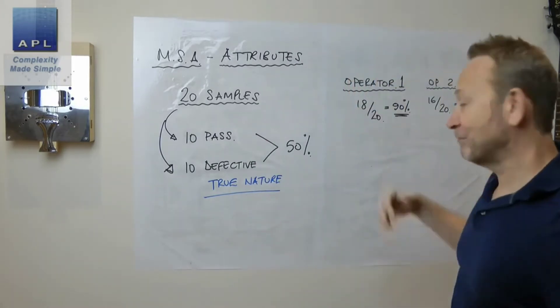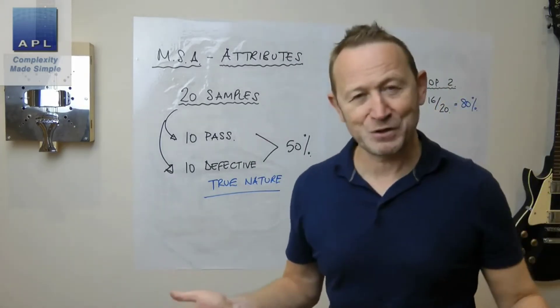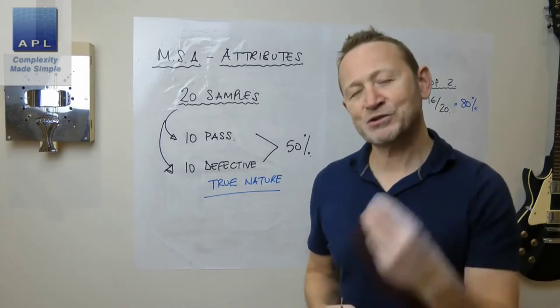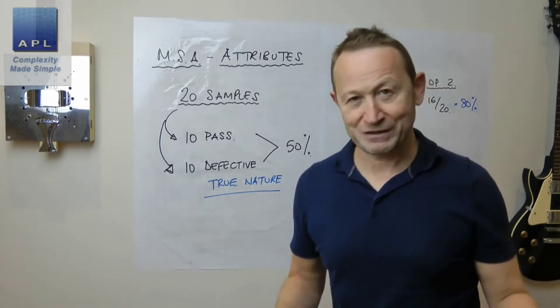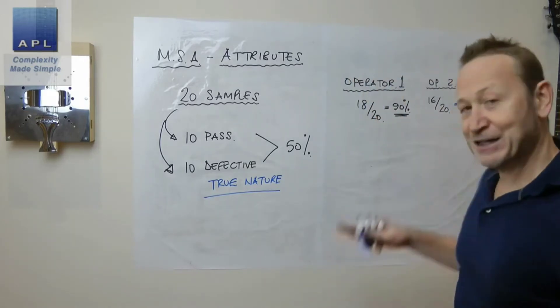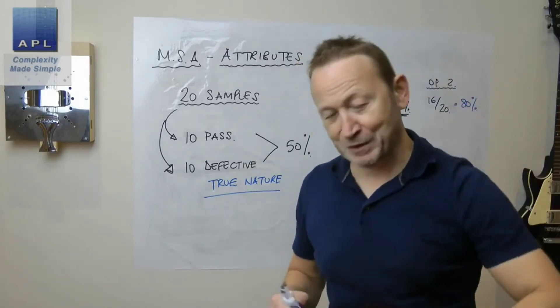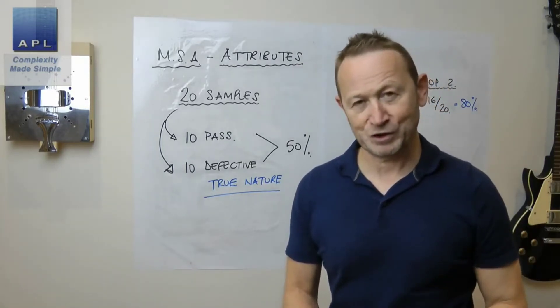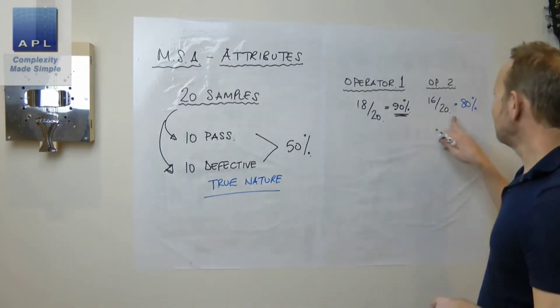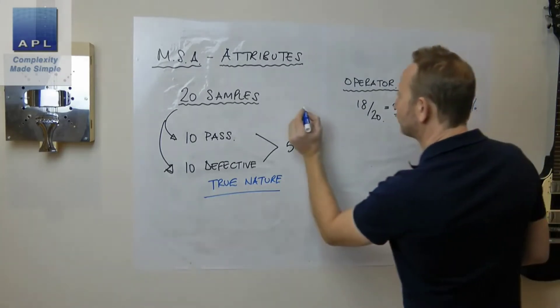By the way, 80% is still an acceptable system. People often look at these numbers and they think they want it to be 100% correct. When you're doing cosmetic inspection it's never going to be 100% correct, and 80% is the cutoff. If you're below 80% that's the point where you'd want to do some improvement work on this. So first of all, the first thing we've worked out there is what's known as the effectiveness, how effective are the measurement systems.